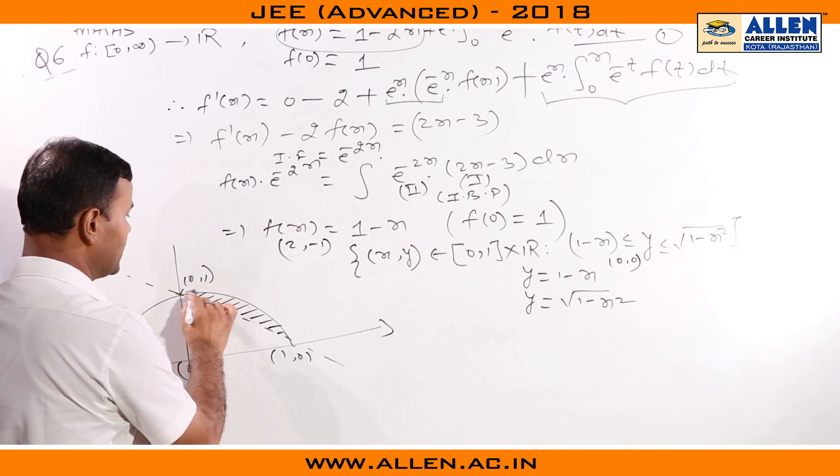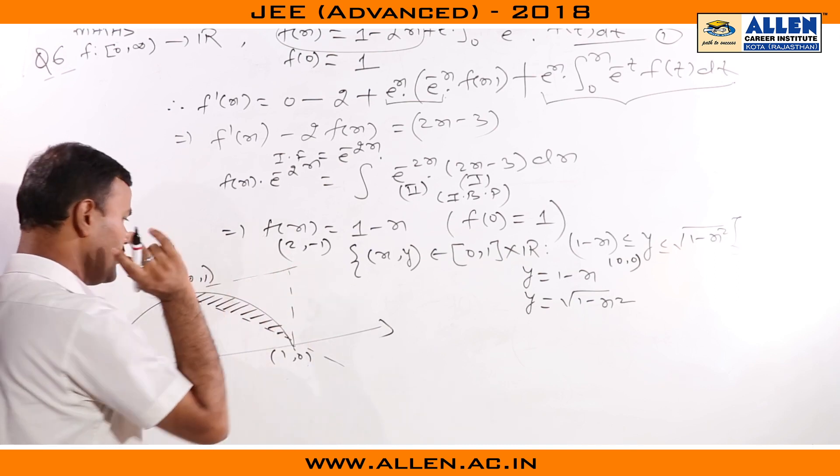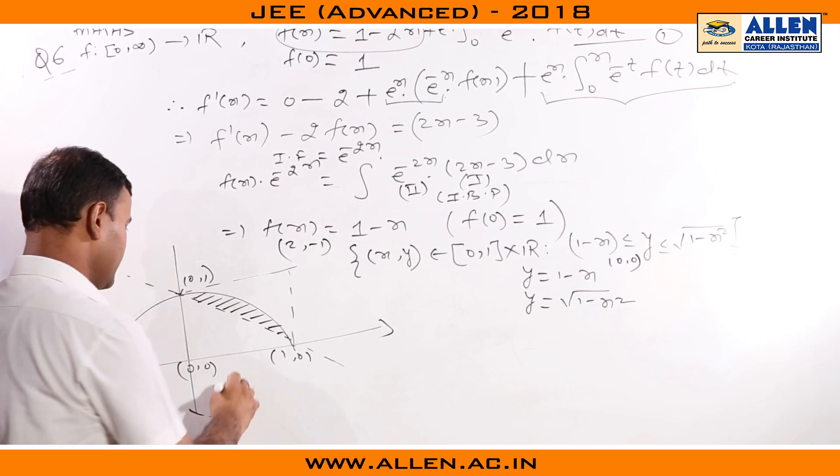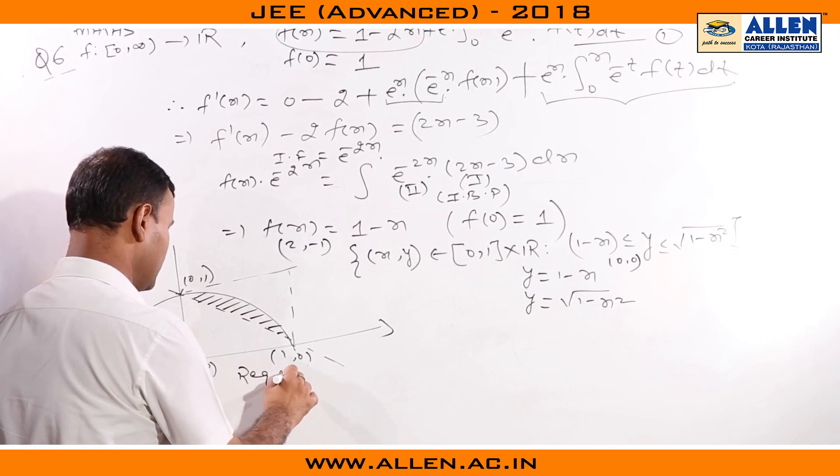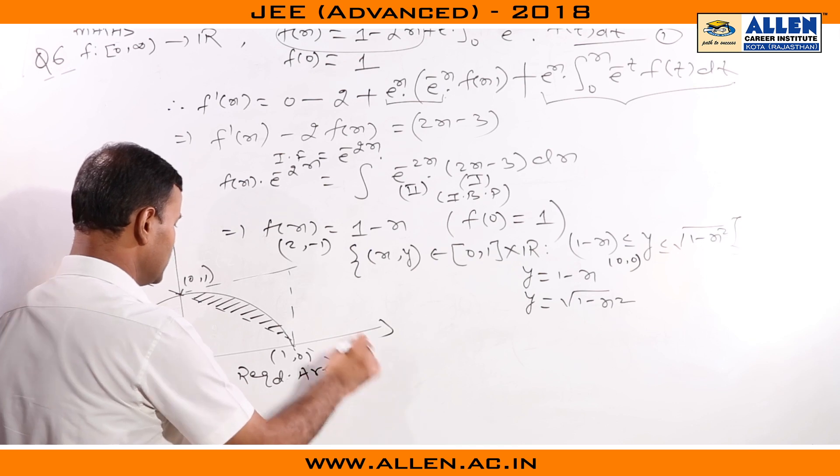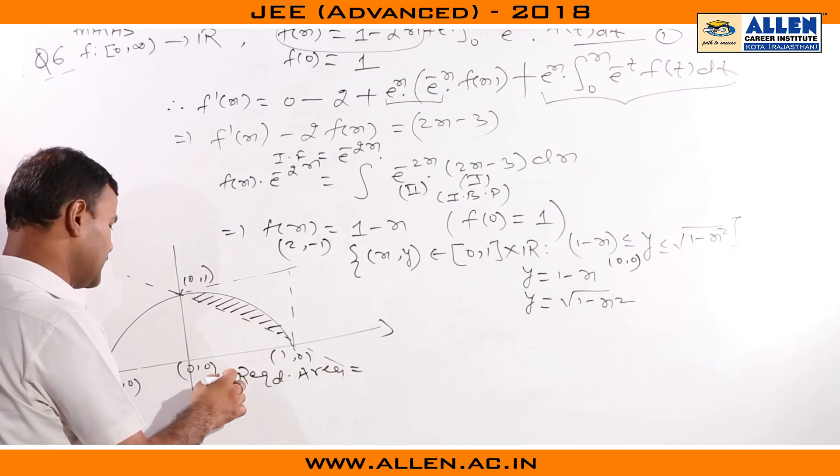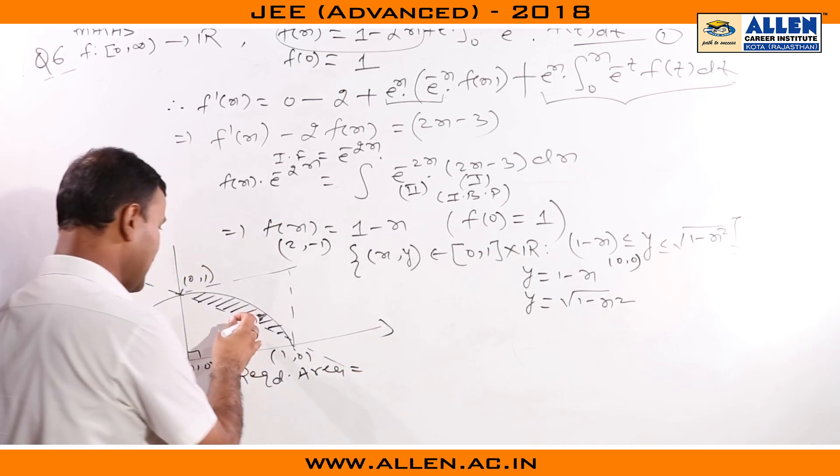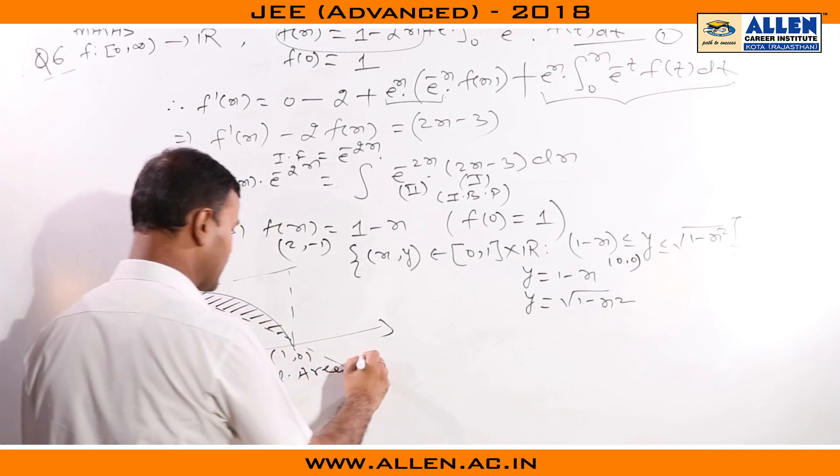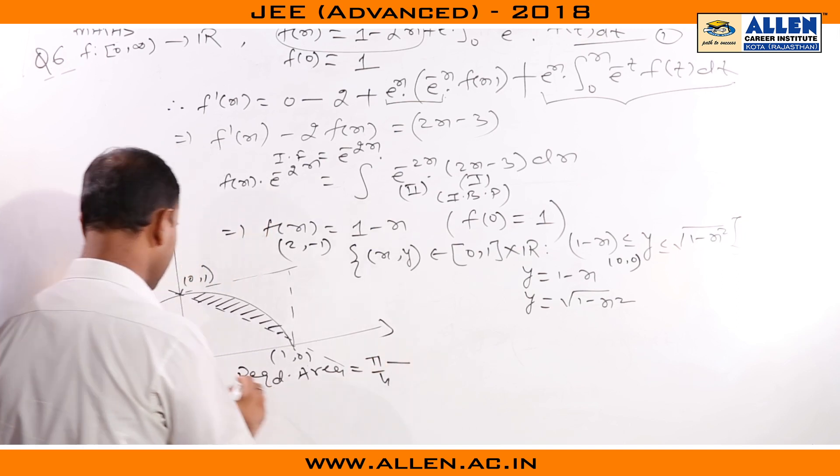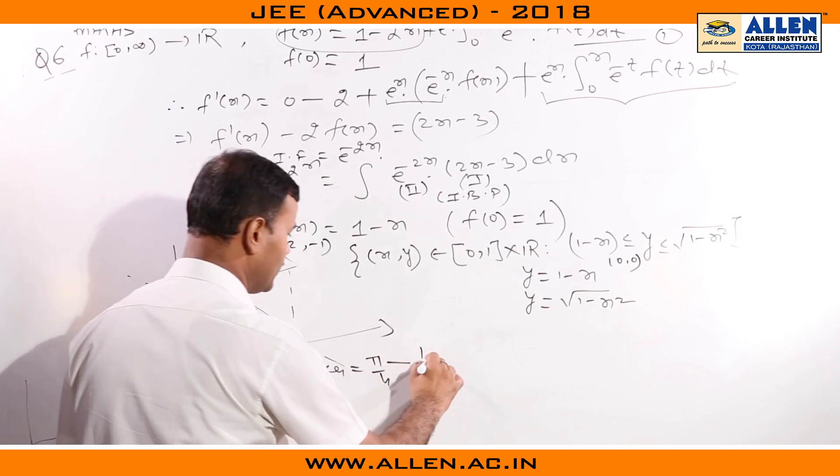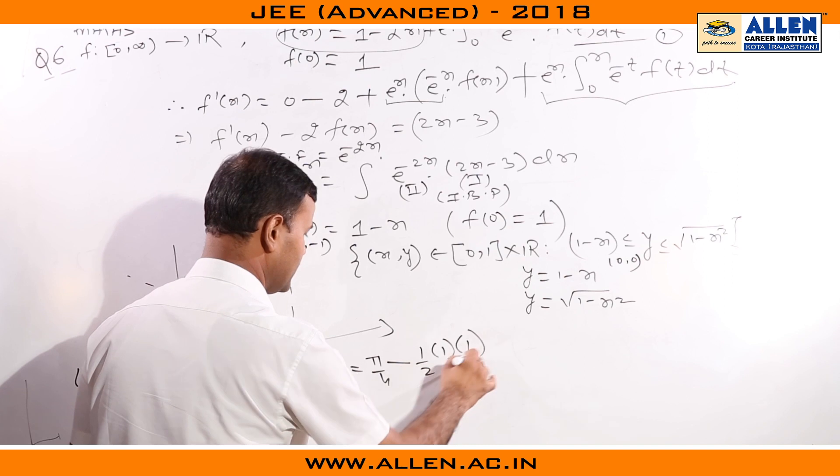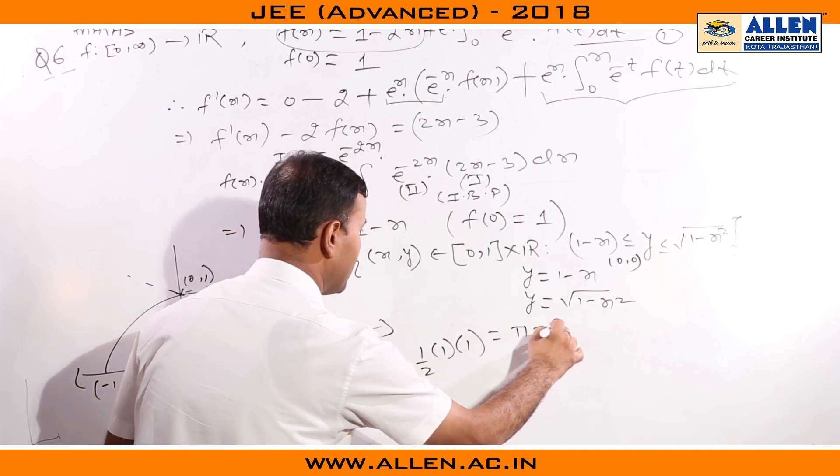From this we get the required area will be equal to this shaded portion. This is the area of the quadrant of this circle minus the area of this triangle. Finally we get (π - 2)/4 square units.